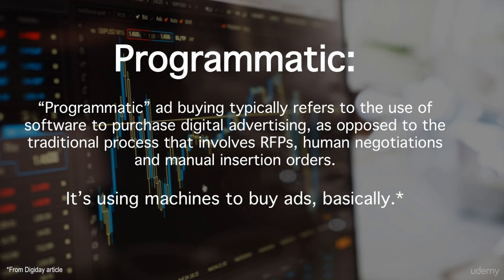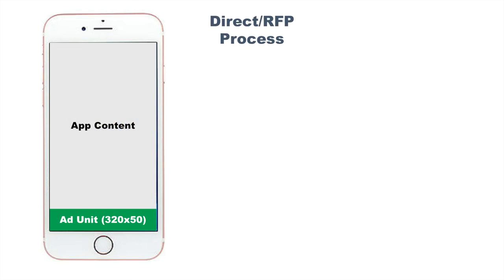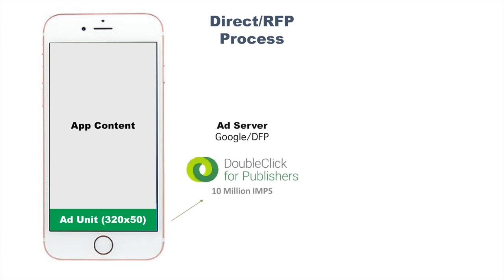So to illustrate that, let's say we have an app, and we're going to go through the traditional direct RFP process — RFP being request for a proposal. I have an app, and I have an ad unit down here in green, 320 by 50. Every month I get about 10 million impressions from users opening my app and using it. I'm using Google's DFP as my ad server, and every month I have 10 million ads that run through that ad server, and I want to sell those ads — I want to monetize that.